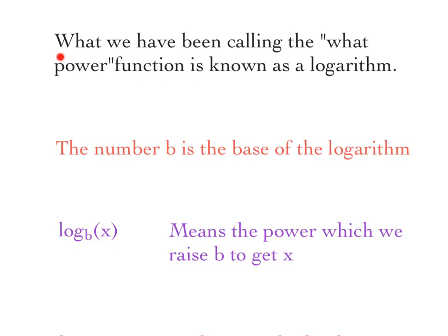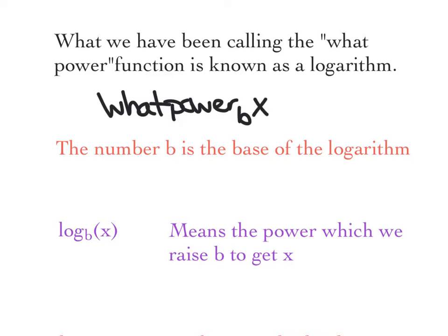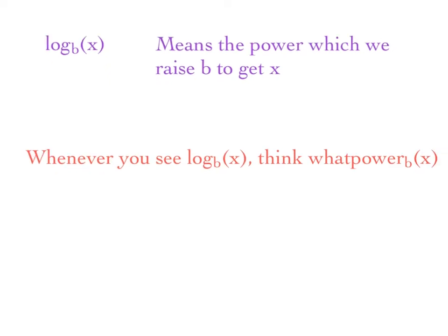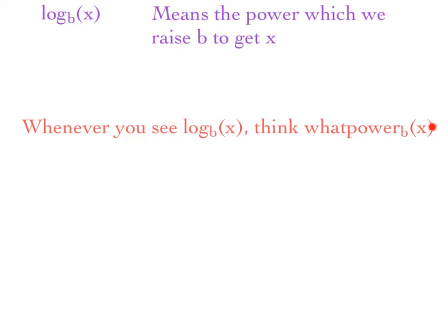So again, let's carefully write this out. What we have been calling the 'what power function' is known as a logarithm. Practice saying that word: logarithm. The number b is the base of the logarithm. So we were saying what power of b is x. This little number b is the base of the logarithm, and here's how we're going to write it out. We abbreviate it with 'log,' so we say log base b of x, which means the power at which we raise b to get x. Whenever you see log base b of x, you need to be thinking: what power of b is x?